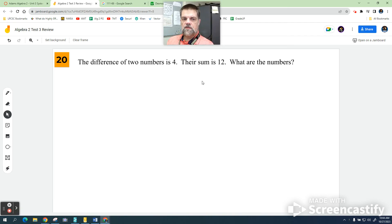So it says the difference of two numbers is 4 and the sum is 12. I don't know what the numbers are, but the first number I'm going to call x and the second number I'm going to call y.